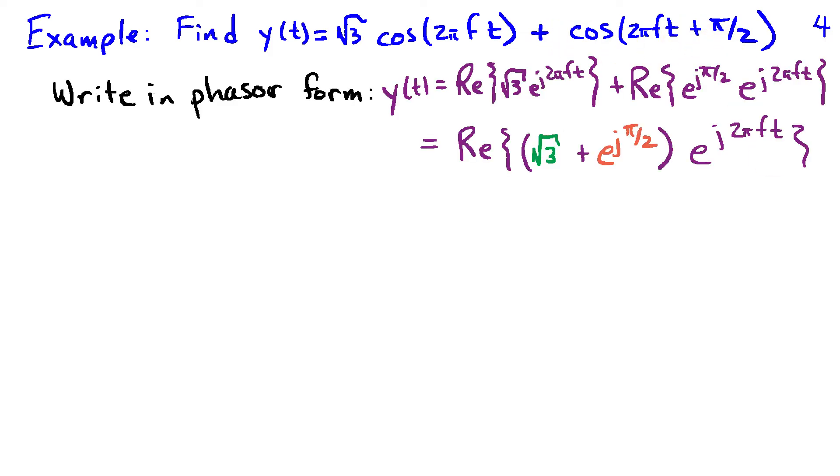I can write these in phasor form as a sum of the real parts where my first sinusoid has phasor square root of 3 e to the j 0, or 1, so I'm not explicitly writing the e to the j term here. The second one has phasor e to the j pi over 2, so the amplitude in this case is 1. Again, I'm not going to write that. So the phasor of the sum of these two is the sum of the individual phasors, and therefore my sinusoid y of t is going to have square root of 3 plus e to the j pi over 2 as its phasor.